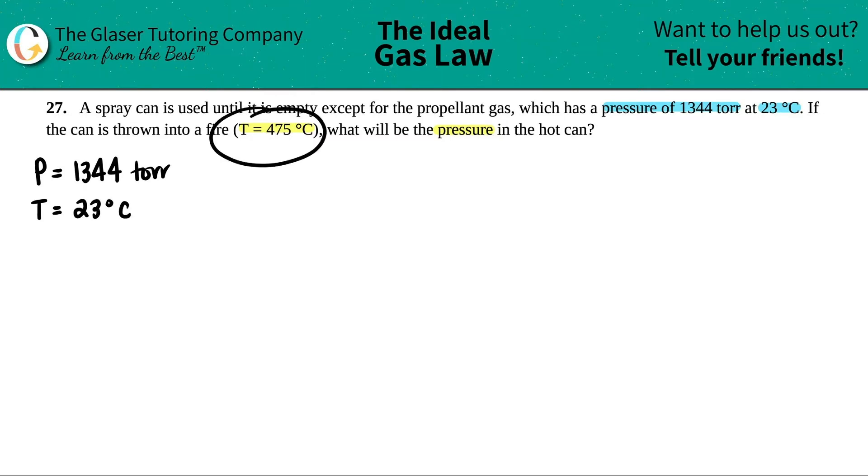So now they give me another temperature, right? And something different is happening. They're saying that we're throwing the can into a fire, and that's the new temperature. The new temperature is 475 degrees Celsius. At that temp, what will be the pressure? So these two things go together, right? If this is the temperature, what's going to be the pressure?